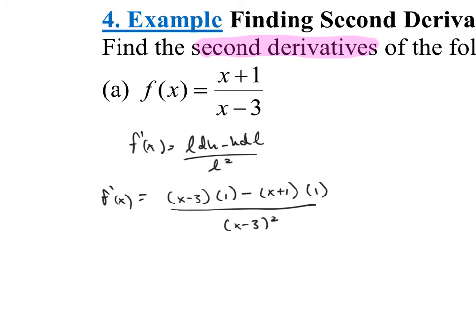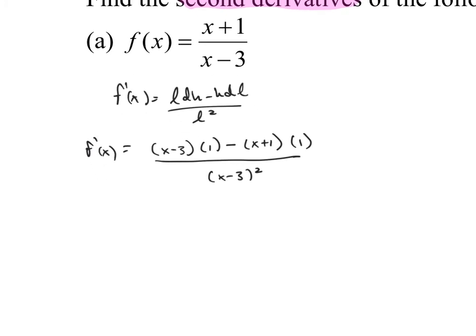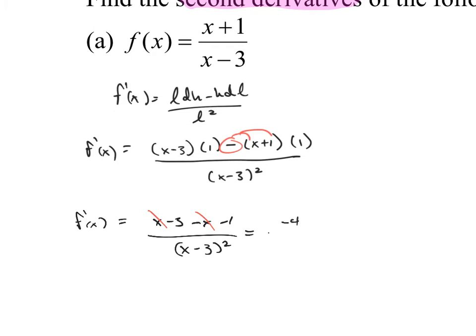Let's clean this up. I'm still working with f prime of x here. x minus 3 times 1 would be x minus 3. I'm going to distribute the negative on the next one, so it's going to be minus x and minus 1. This is all over x minus 3 quantity squared. The x's are going to cancel. Minus 3 minus 1 would be a negative 4, over x minus 3 quantity squared.